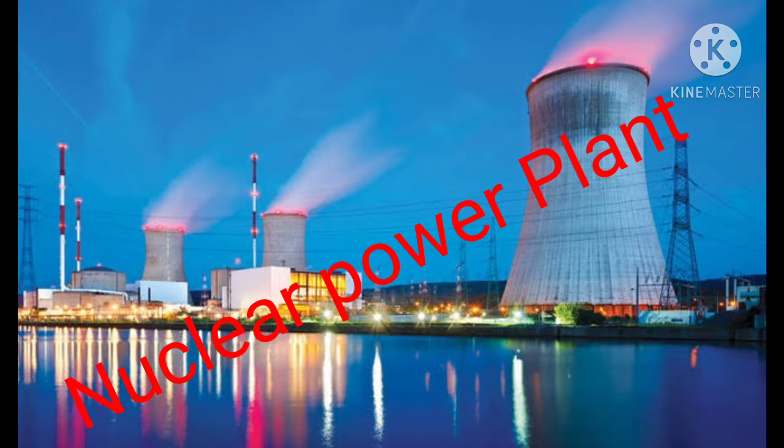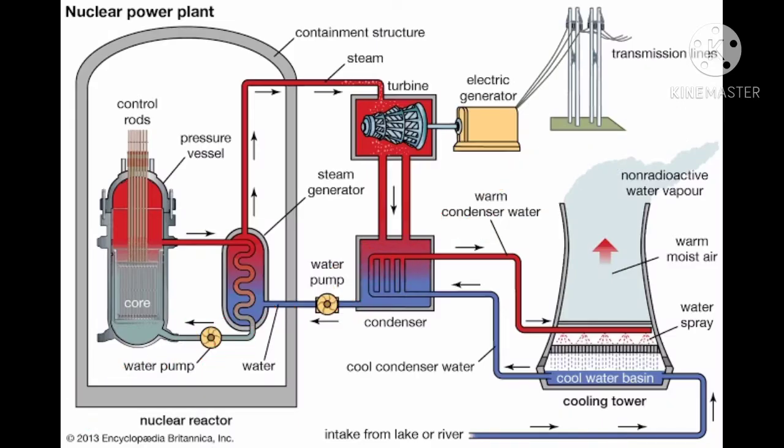In nuclear power plants, neutrons collide with uranium atoms, splitting them. This split releases neutrons from the uranium that in turn collide with other atoms, causing a chain reaction. This chain reaction is controlled with control rods that absorb neutrons.